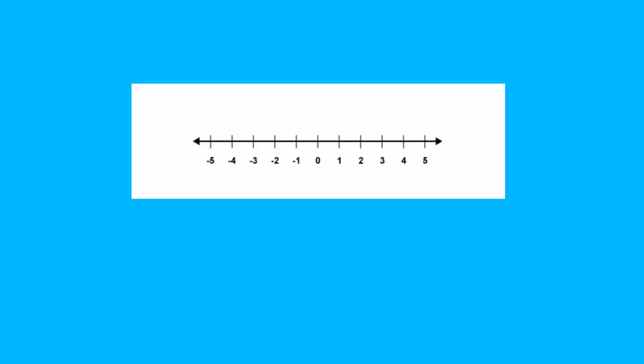Let's have a look at a number line. We can see here that as we go past 0, we get negative numbers. We have minus 1, minus 2, minus 3, minus 4, minus 5, and so on.